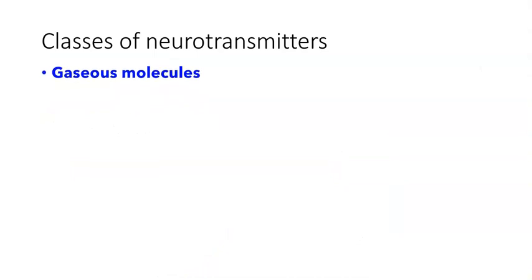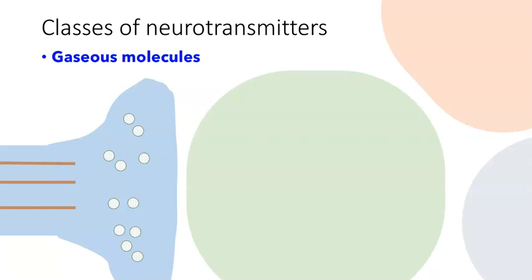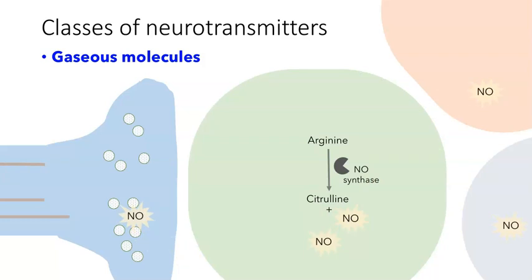Let's look at gaseous molecules. By far the best characterized is nitric oxide, NO — and I want to stress that nitric oxide is not the same as nitrous oxide, which you might have encountered at a dental appointment as an anesthetic. Gaseous transmitters like NO are not normally present in the cell and need to be synthesized. For NO, the precursor molecule is arginine. If an enzyme called nitric oxide synthase is activated, that arginine will be converted into citrulline and also generate NO. NO is a small gas; it's very soluble and will diffuse away from the cell, allowing it to act in the cell itself, in the presynaptic input, in a neighboring neuron, or even on astrocytes.